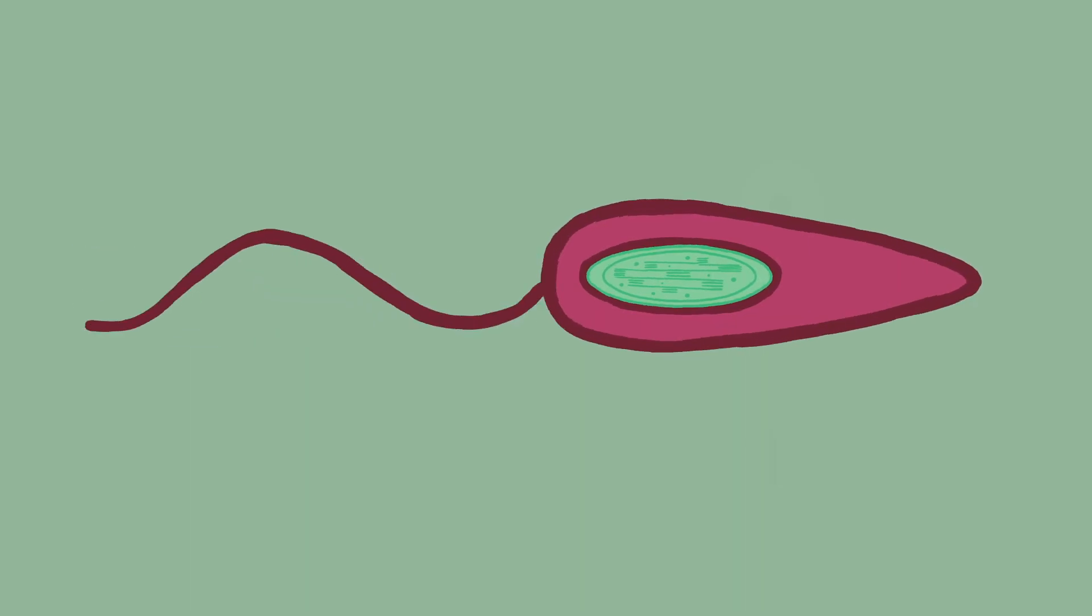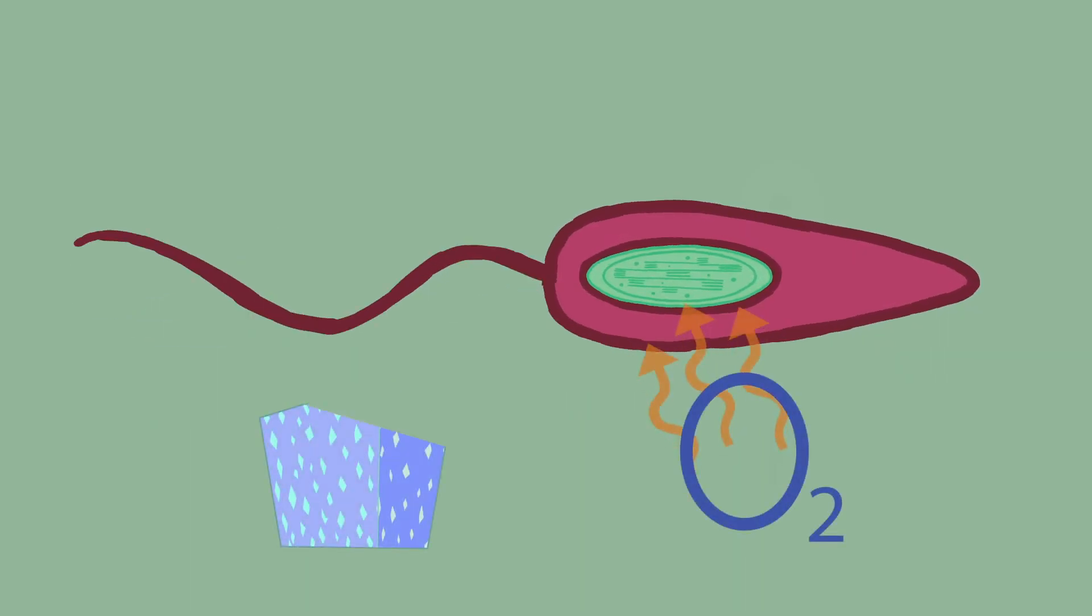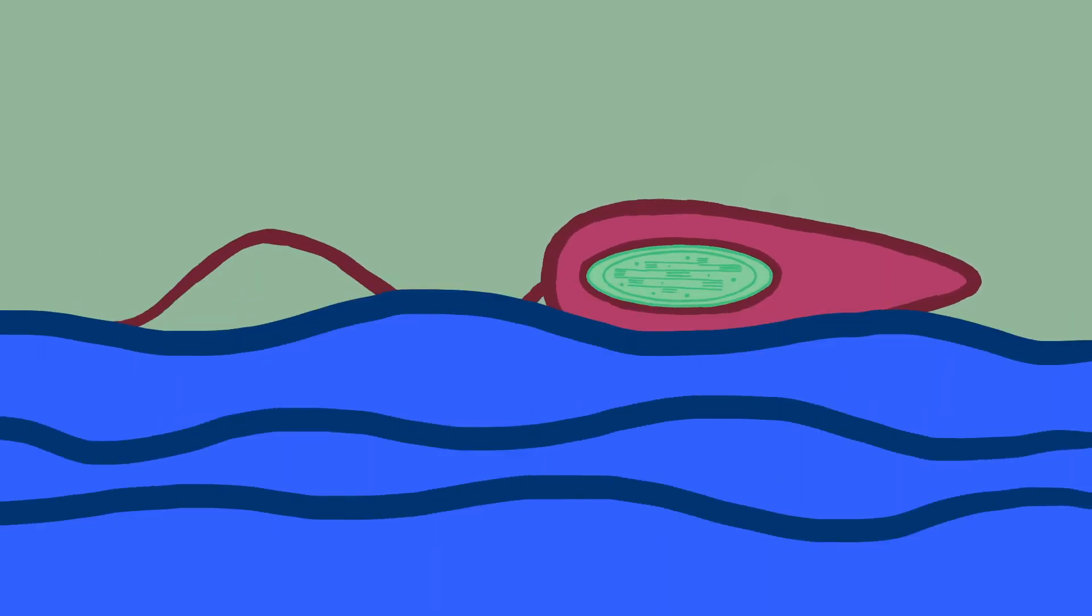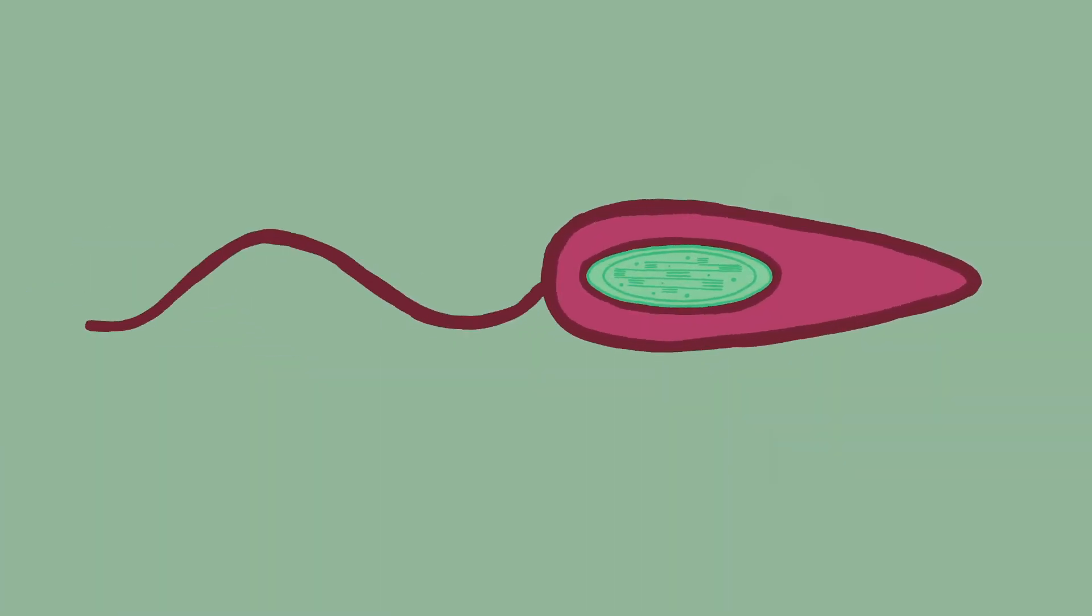Euglena can perform photosynthesis, break down sugar using oxygen, and swim around pond water. And as the theory would predict, the chloroplasts in these euglena have three membranes, since they had two before being engulfed.